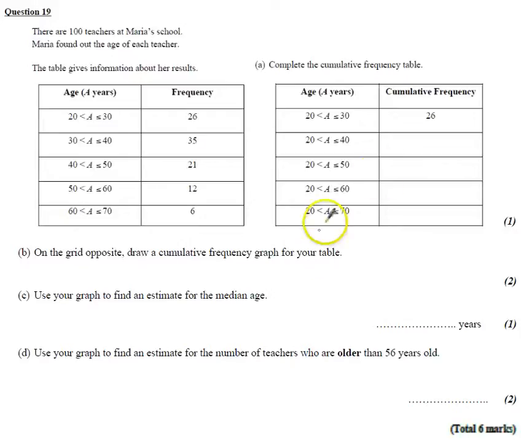Right, question number 19. This is a cumulative frequency question. It says there's a hundred teachers at Maria's school. Maria found out the age of each teacher and put it in a grouped frequency table.